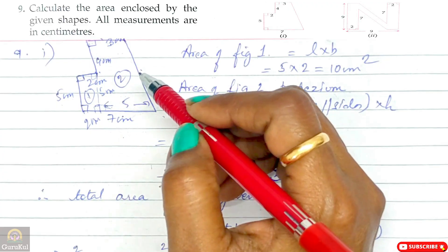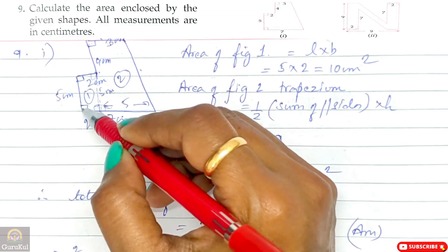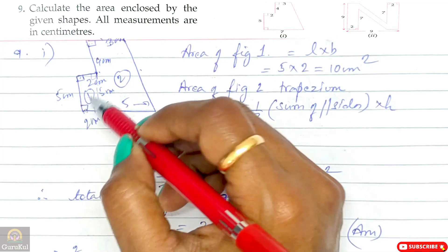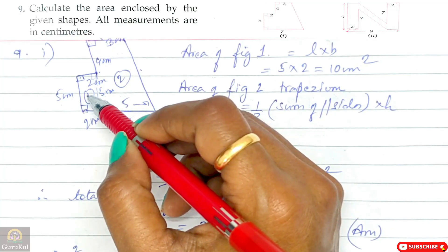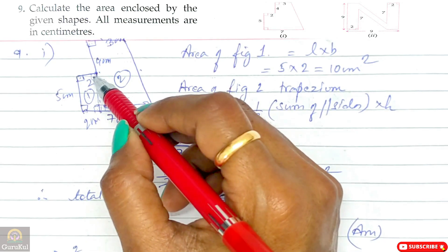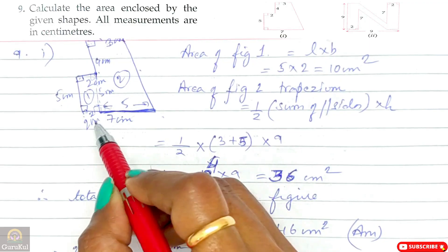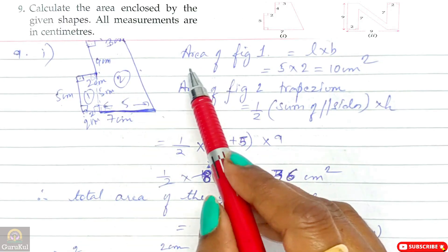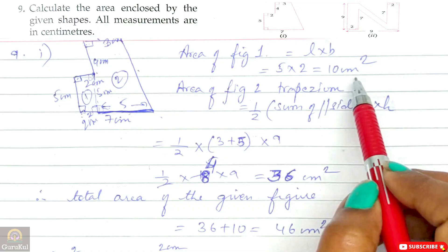Figure 1 is a rectangle with length 5 cm and breadth 2 cm. The remaining portion (figure 2) has a length of 7 minus 2 = 5 cm. Area of figure 1 = length into breadth = 5 into 2 = 10 cm square.